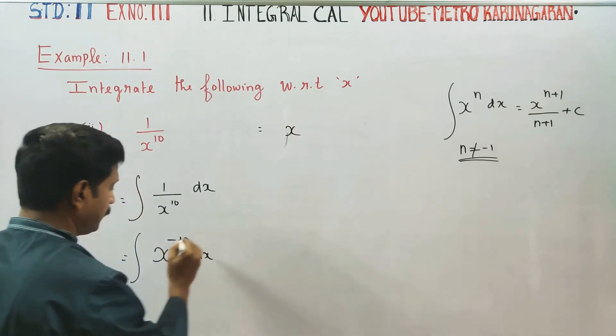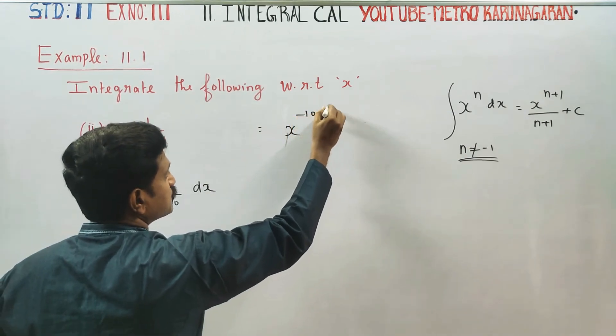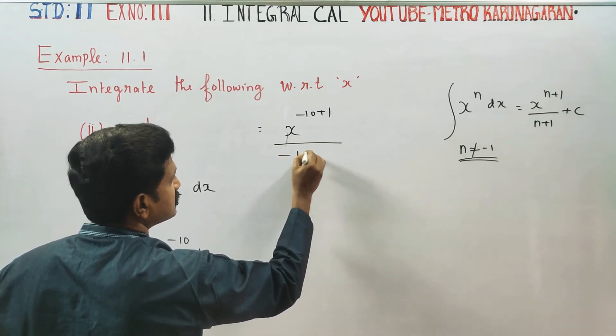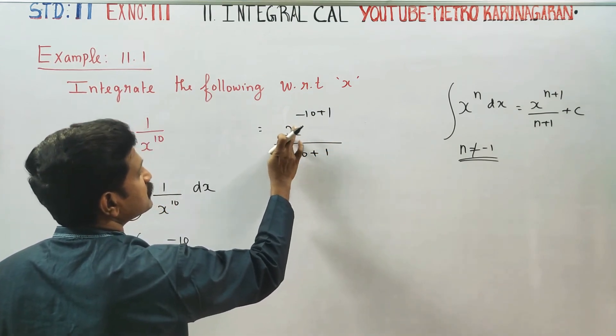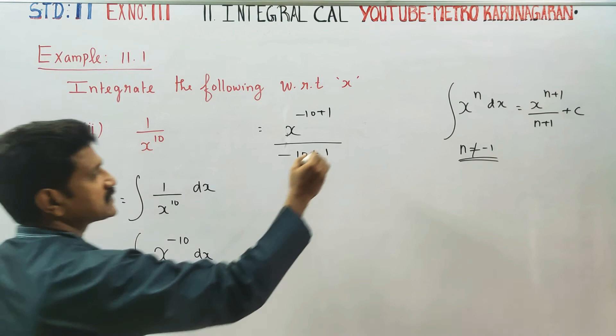We get x power minus 10 plus 1, divided by minus 10 plus 1, plus c.